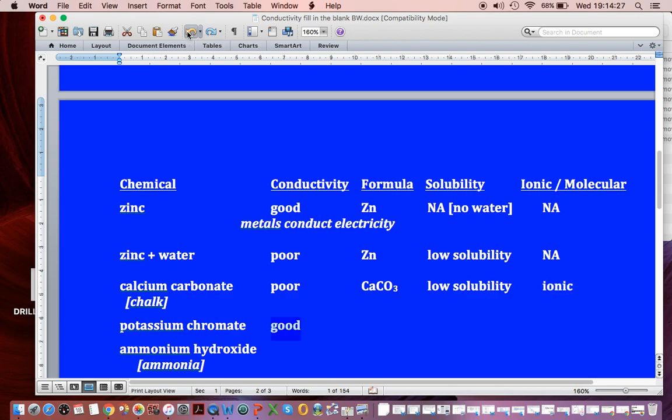Potassium chromate. It was good. K2CrO4. It is soluble. And it is ionic.